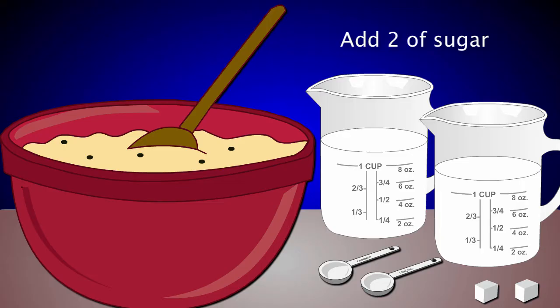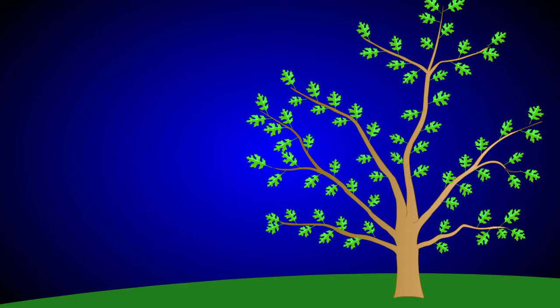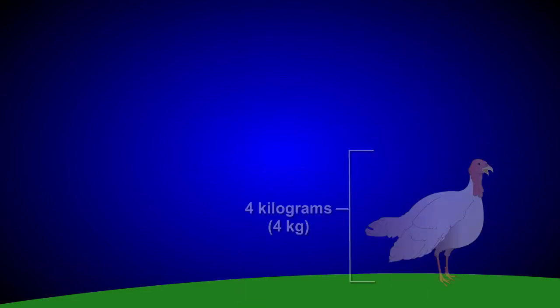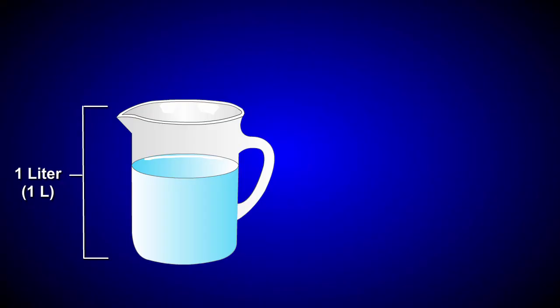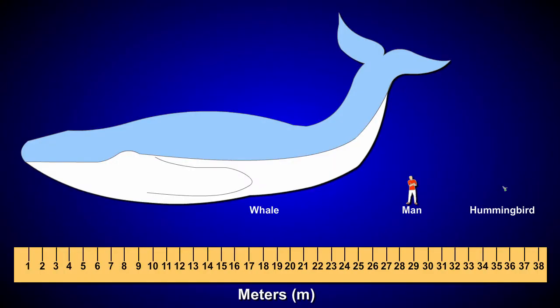Units of measurement are used to describe objects. They can describe the size of an object like a tree that is five meters in height or a flower that's five centimeters, the weight of an object, four kilograms versus four grams, or the volume of an object, one liter of water or one milliliter of water.